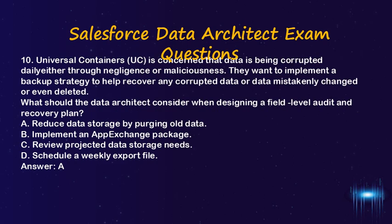Question 10. Universal Containers (UC) is concerned that data is being corrupted daily either through negligence or maliciousness. They want to implement a backup strategy to help recover any corrupted data, or data mistakenly changed or deleted. What should the data architect consider when designing a field-level audit and recovery plan? A. Reduce data storage by purging old data. B. Implement an AppExchange package. C. Review projected data storage needs. D. Schedule a weekly export file. Answer: A.